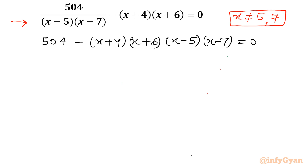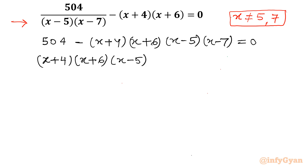Multiply this equation with minus 1, so the second term will come out first: (x plus 4)(x plus 6)(x minus 5)(x minus 7) minus 504 equal to 0.